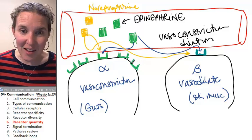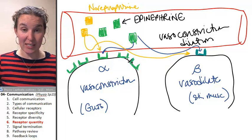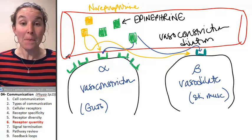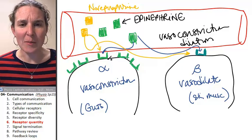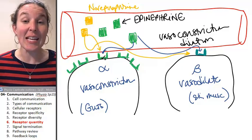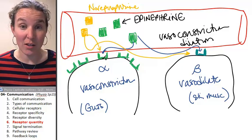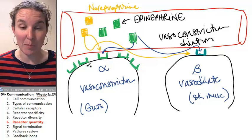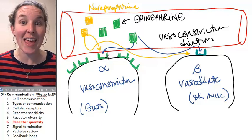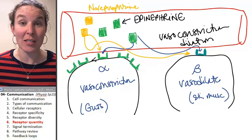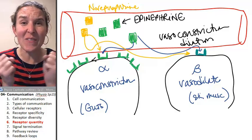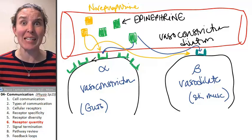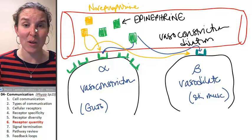And if the cell increases its number of receptors, actually, I think it's backwards. I think if there isn't very much of the chemical in the space, then it's going to increase the number of receptors that it has, so that even if there's one, it's probably going to hit the receptor.